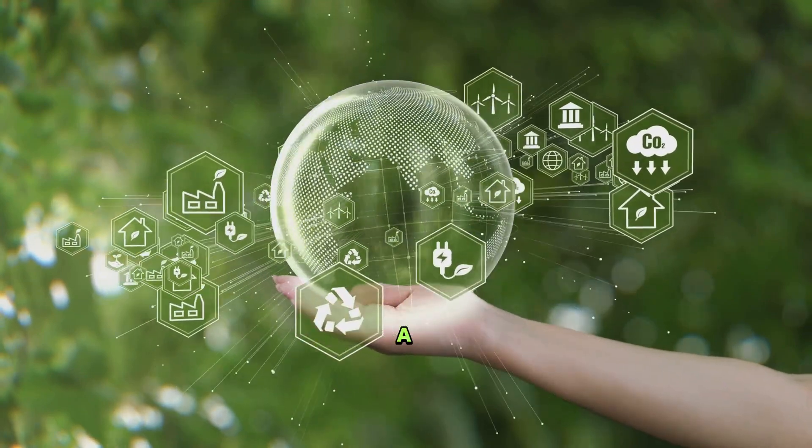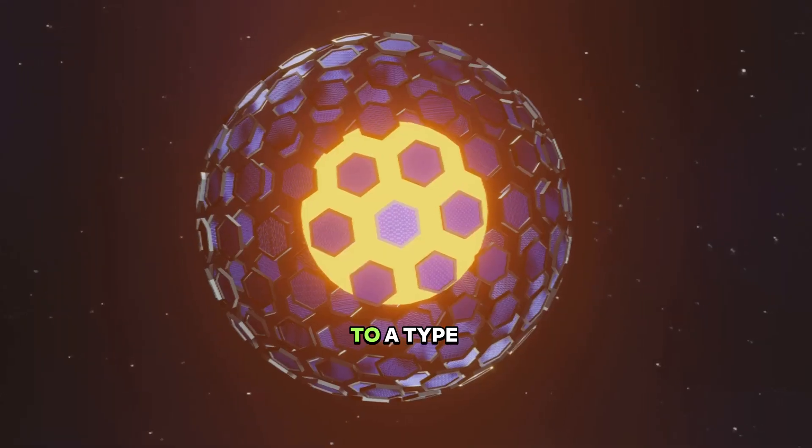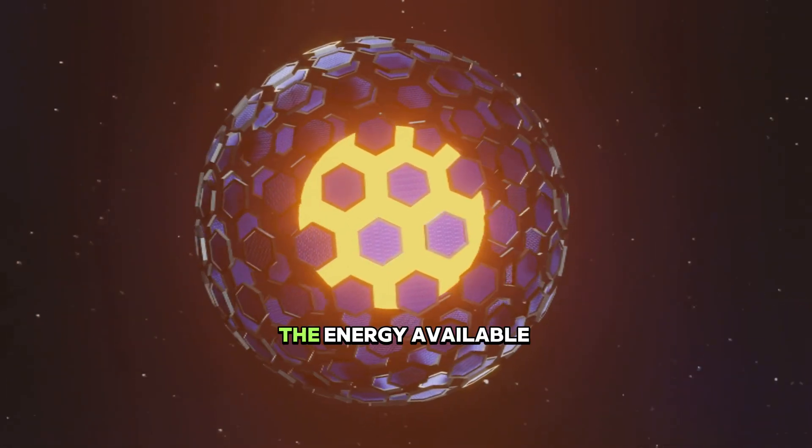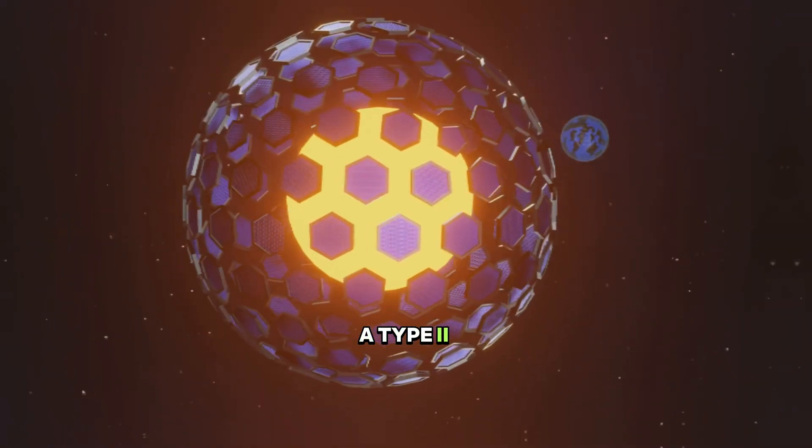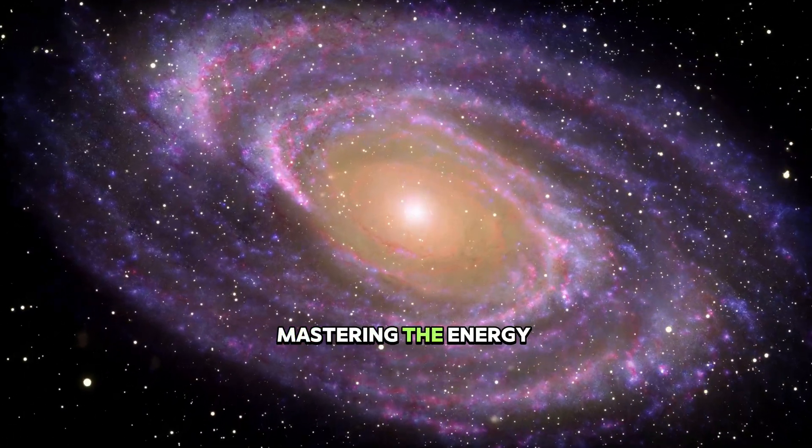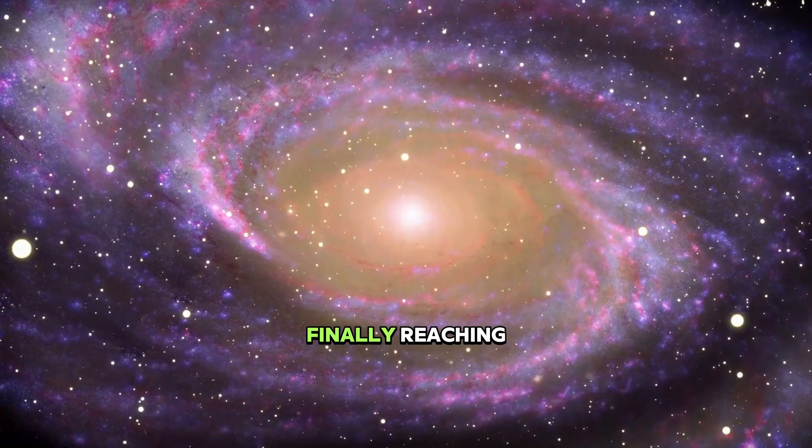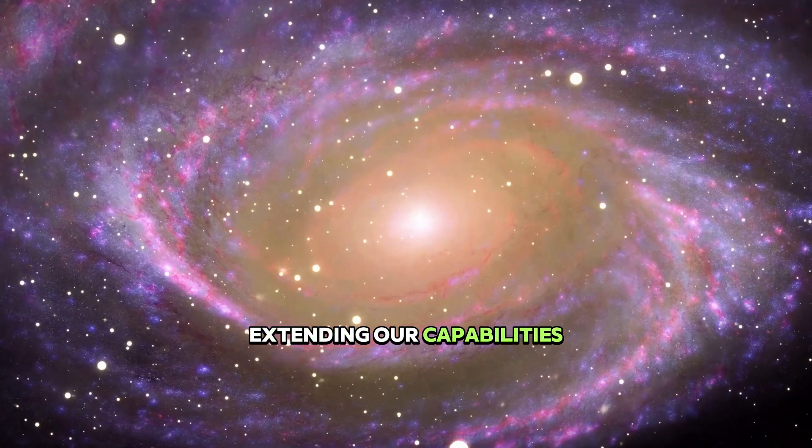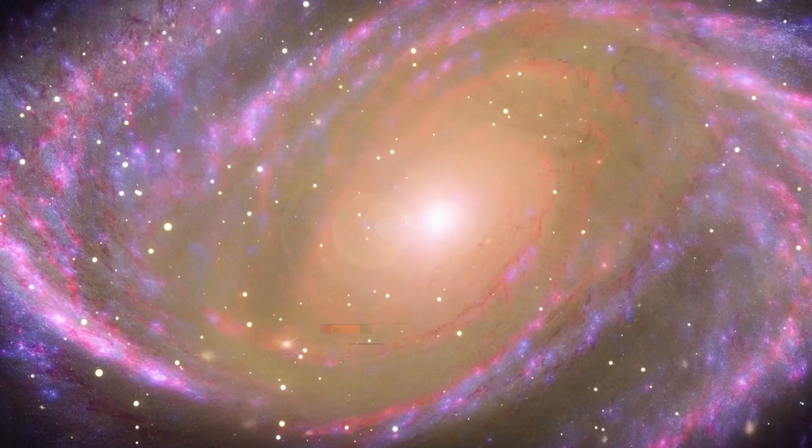Today's journey to a Type 3 civilization involves first evolving into a Type 1 civilization, where we can utilize all the energy available on Earth. Next, we would become a Type 2 civilization, mastering the energy of our sun and our solar system. Finally, reaching Type 3 status would mean extending our capabilities across the entire galaxy, harnessing the power of billions of stars.